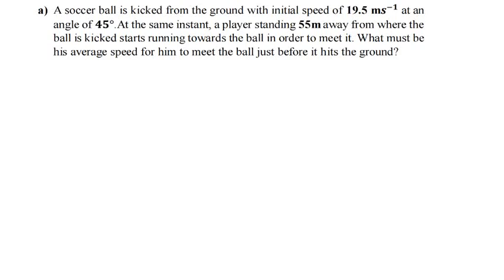In this tutorial we are going to solve a very interesting projectile motion question. A soccer ball is kicked from the ground with an initial speed of 19.5 meters per second at an angle of 45 degrees. At the same instant, a player standing 55 meters away from where the ball is kicked starts running toward the ball. What must be his average speed for him to meet the ball just before it hits the ground? Let's first come up with a free body diagram.